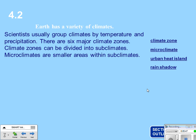Scientists usually group climates by temperature and precipitation. There are six major climate zones, which can be divided into sub-climates. Micro-climates are even smaller than sub-climates — micro means really small, so micro-climates are very tiny areas.